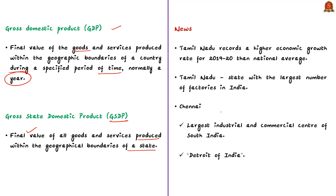Let's know in brief about the economy of Tamil Nadu. Tamil Nadu is the state with the largest number of factories in India, and its capital city Chennai is the largest industrial and commercial center of South India. Chennai is known as the Detroit of India due to the presence of a large number of automobile industries, and almost one third of India's automobile manufacturing industry is concentrated here.